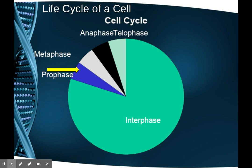Next we look at the four stages a cell uses to copy itself. At the beginning of interphase the cells grew to full size, in the middle they did their job, and at the end they copied everything inside so they could split. Now we are ready to split, and we get to our first phase: prophase.